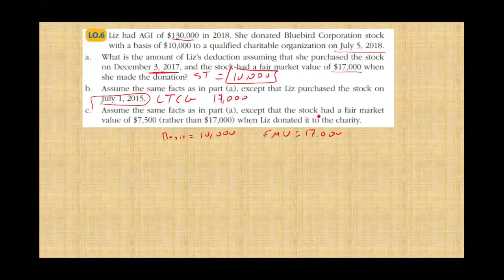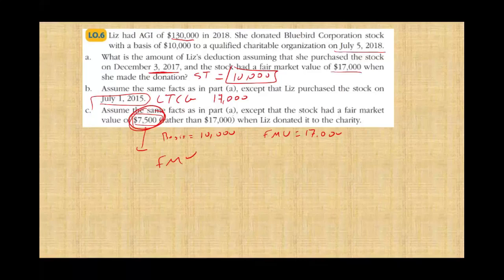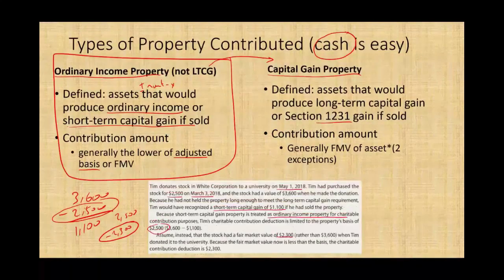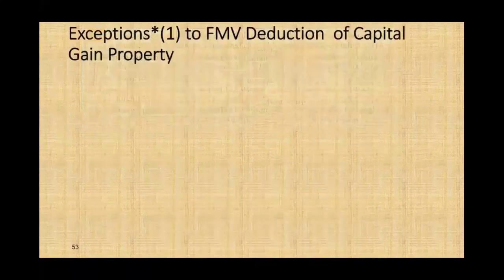Assume the same facts as Part A except the stock has a fair value of $7,500 rather than $17,000. If the fair market value is $7,500, you can only take $7,500 — you cannot take the basis of $10,000. If you allowed taxpayers to take the basis of $10,000 when the stock went down to $7,500, people would donate all stocks in which they have losses to get a deduction. That's not allowed. So if your fair value is lower than the basis, you go with the fair value.